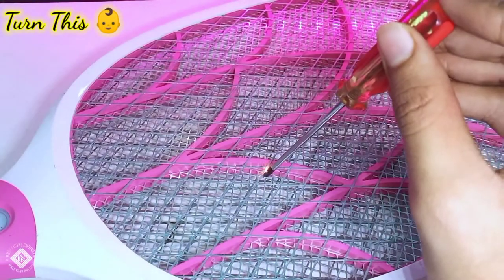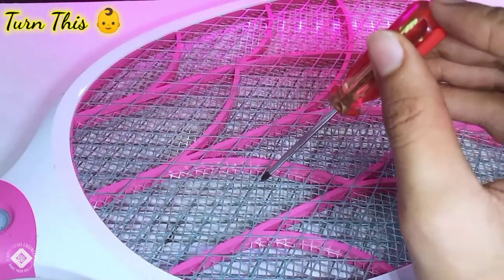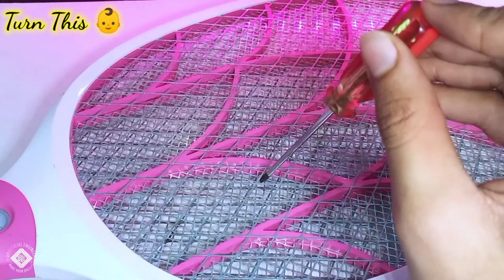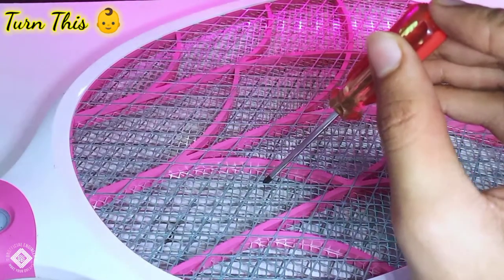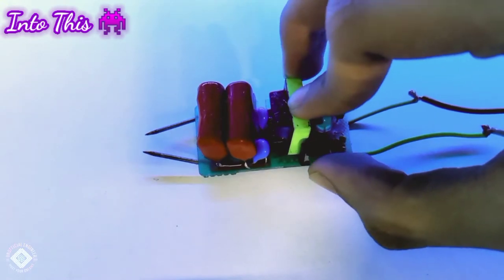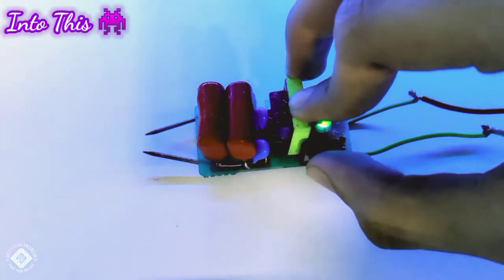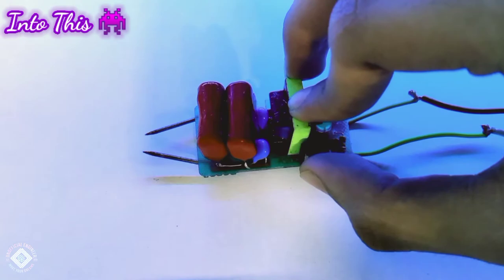In this video, I will show you how you can turn this baby bug zapper, which has hardly 2 kilovolts and is not powerful, into this monster taser gun with 20 kilovolts.